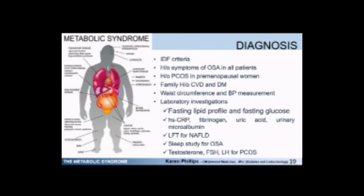How do we make the diagnosis? The presence of waist circumference according to the targets discussed, plus two of the four manifestations. Ask patients about associated conditions such as obstructive sleep apnea — daytime sleepiness, snoring at night, apnea spells at night — history of PCOS in pre-menopausal women, and family history of cardiovascular disease and diabetes. Clinically, measure waist circumference and blood pressure. Laboratory investigations include fasting lipid profile and glucose, inflammatory markers such as high-sensitivity CRP, fibrinogen, uric acid, and urinary microalbumin, liver function tests for non-alcoholic fatty liver disease, sleep study, and gonadotropins for the role of PCOS.